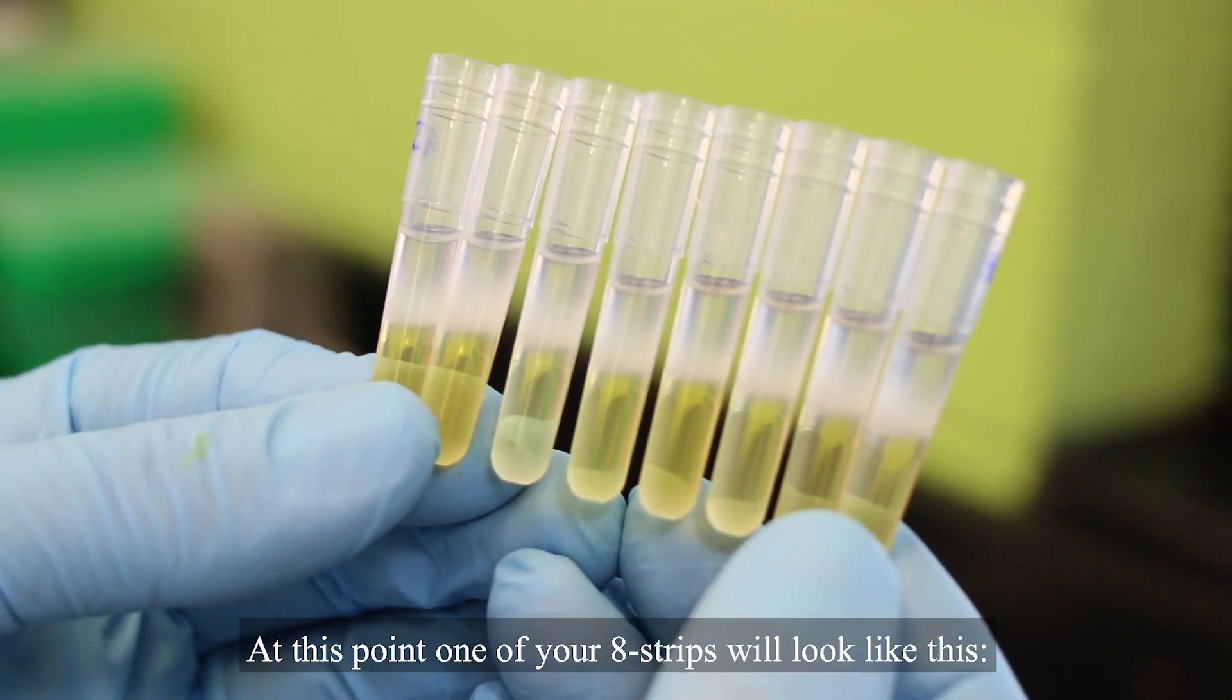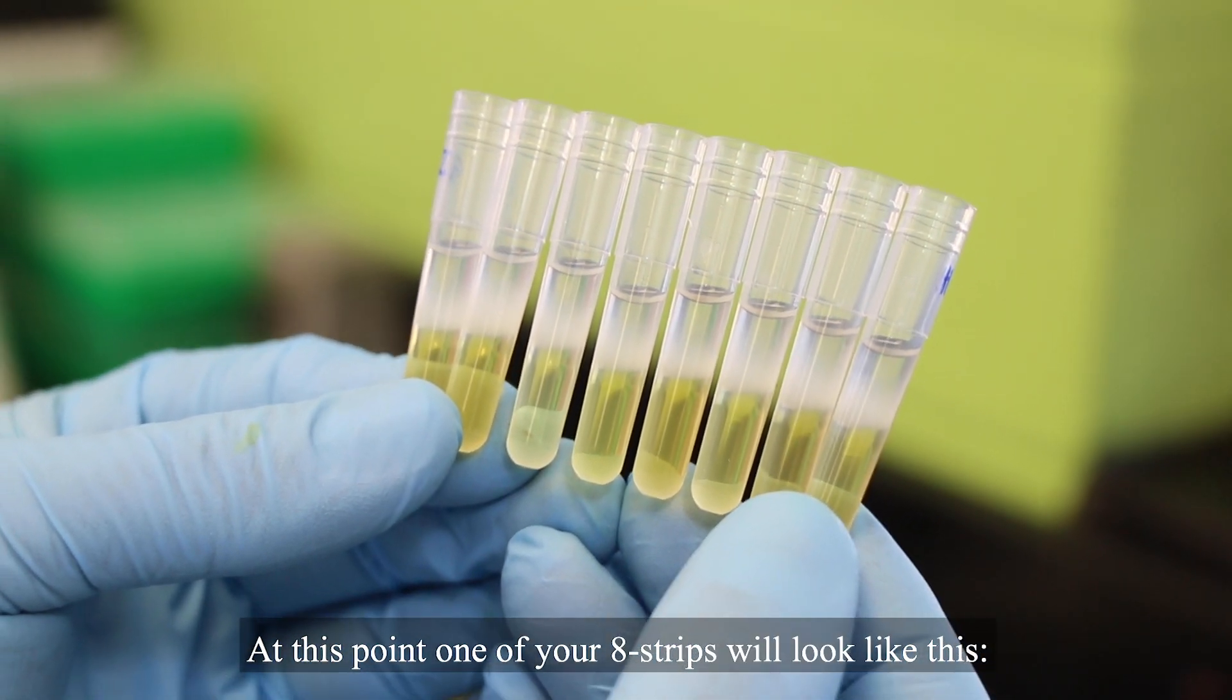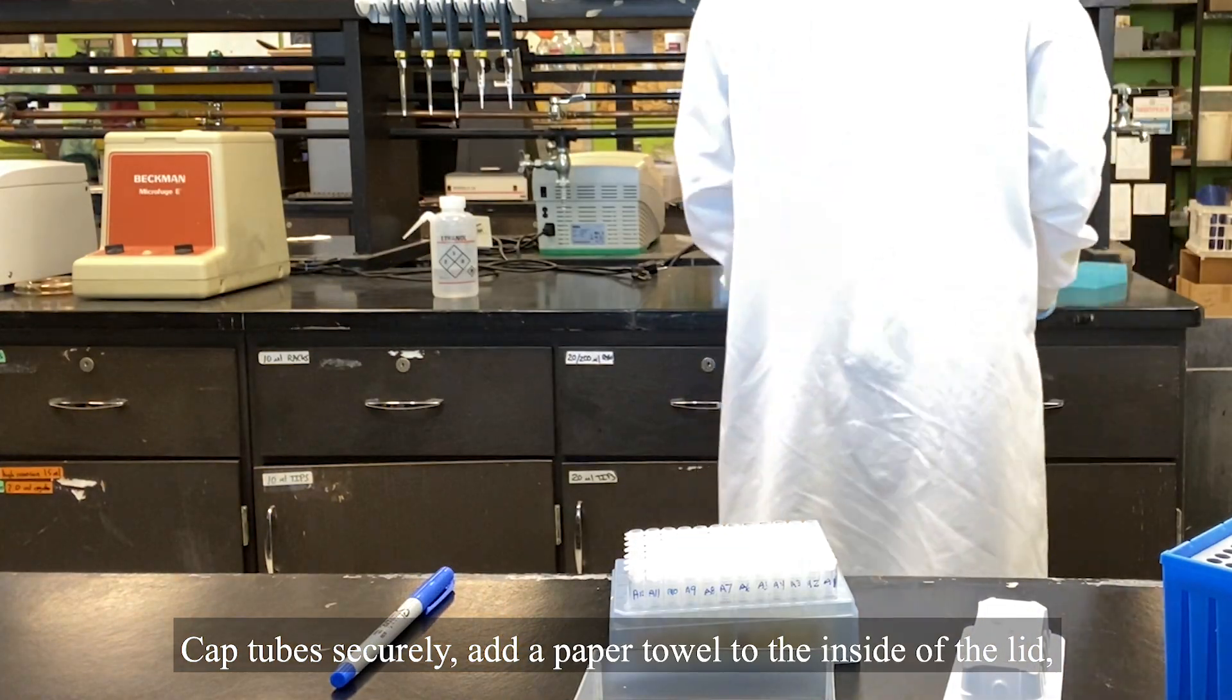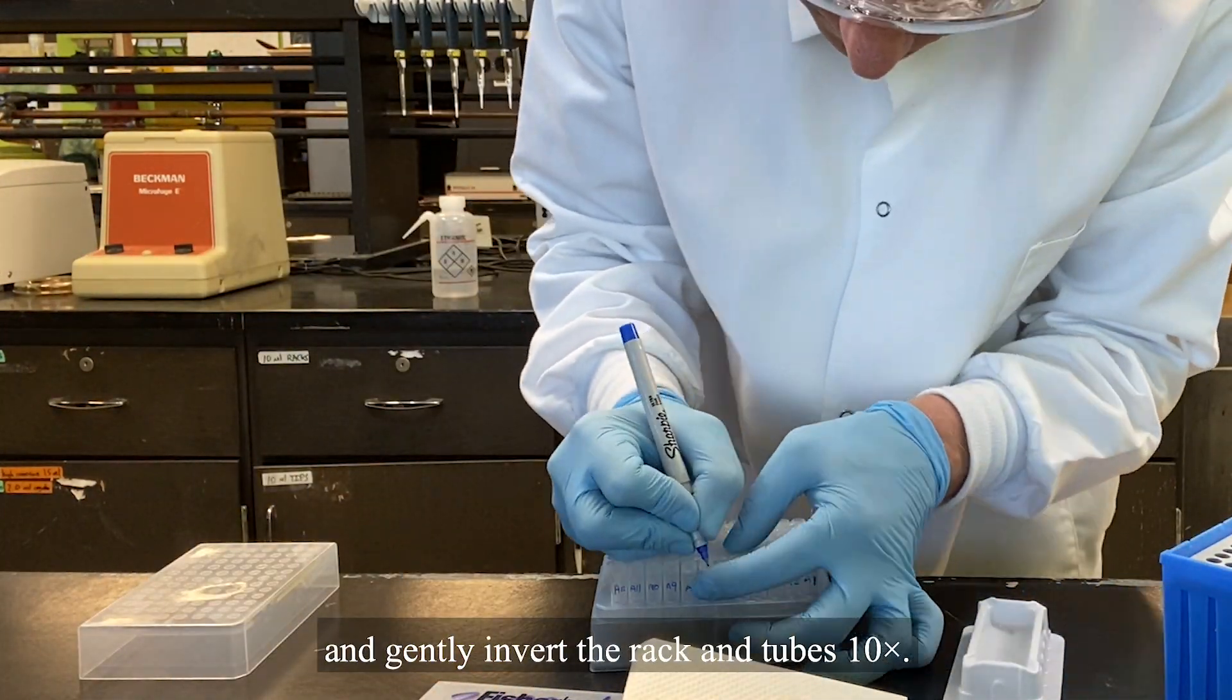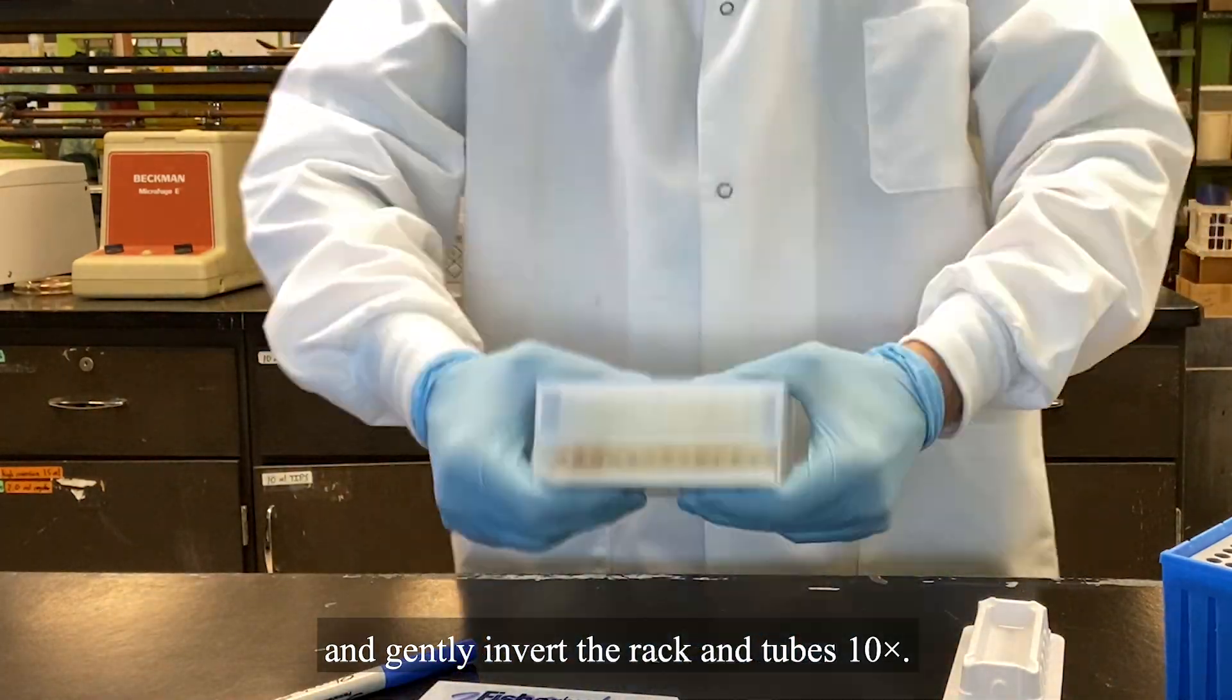At this point, one of your eight strips will look like this. Cap tube securely, add a paper towel to the inside of the lid, and gently invert the rack and tubes ten times.